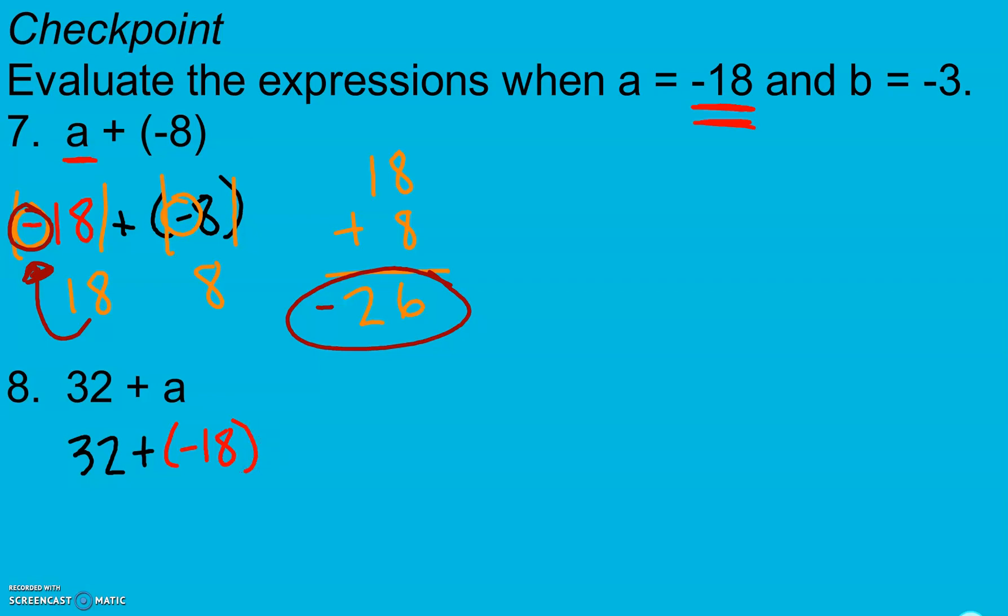So I'm going to go ahead and take my absolute values. Here my signs are different. 32 is positive, negative 18 is negative. When I have different signs, I subtract and find the difference.